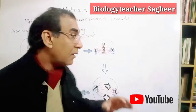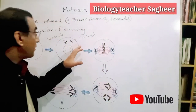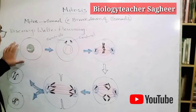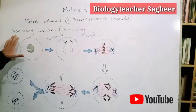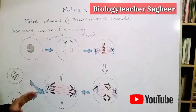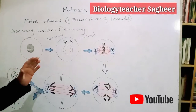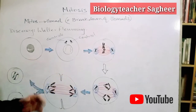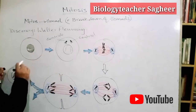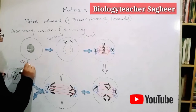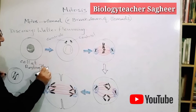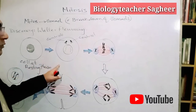For example, here is a cell at the resting phase. This cell is at the resting phase, and at this stage you cannot see the chromosomes.